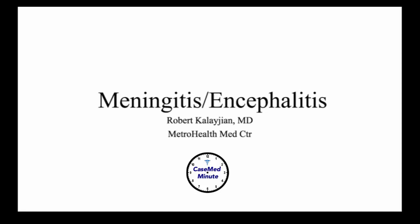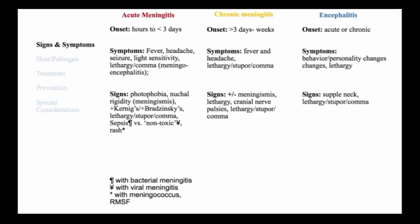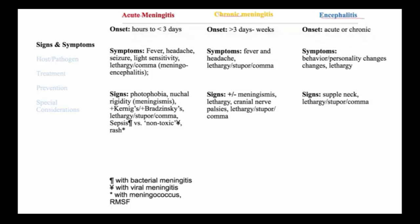This topic is meningitis and encephalitis. My name is Robert Kalajan, the block leader for Block 5. We break down meningitis as acute versus chronic meningitis and encephalitis.